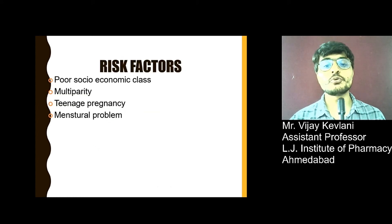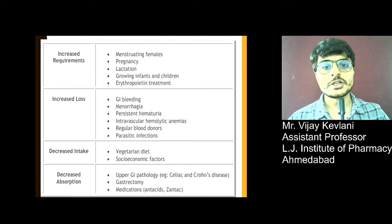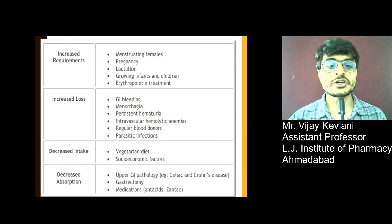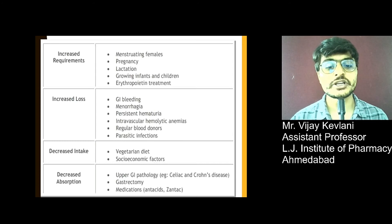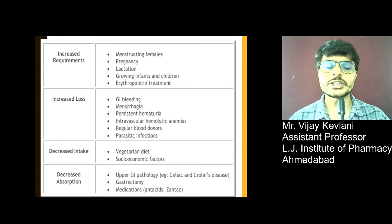Risk factors: poor socioeconomic class, multiparity, teenage pregnancy, and menstrual problems may cause anemia. Increased requirement occurs during menstruating females, pregnancy, lactation, growing infants and children, and erythropoietin treatment. Increased loss occurs during GI bleeding, menorrhagia, persistent hematuria, intravascular hemolytic anemia, regular blood donation, and parasitic infections. Decreased intake: vegetarian diet and socioeconomic factors lead to decreased intake of iron, vitamin B12, and other nutrients. Upper GI pathology, gastrectomy, or medication leads to decreased GI absorption. All these conditions may lead to loss of RBCs or decreased amounts of iron and B12, ultimately leading to different types of anemia.